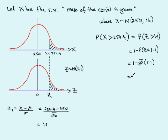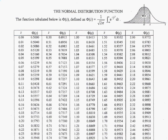So we have 1 minus φ of 1.1. So turning to the tables now, okay, here's a typical set of tables. We look up the Z value of 1.1, which is here, and we see that the equivalent φ of 1.1 is 0.8643.